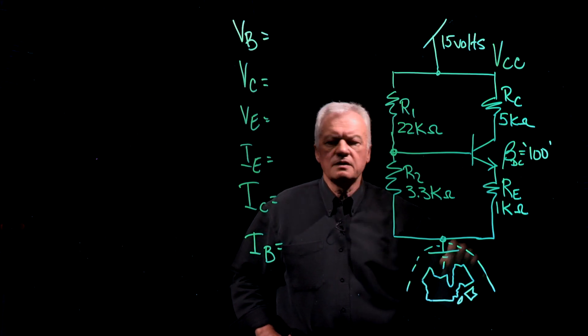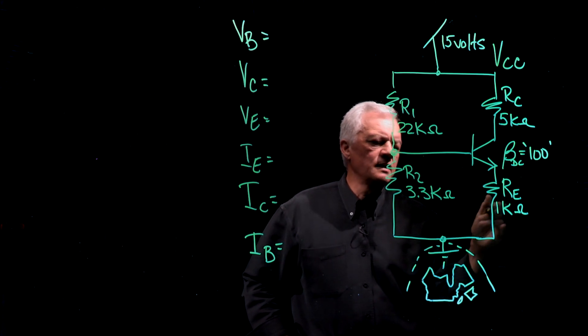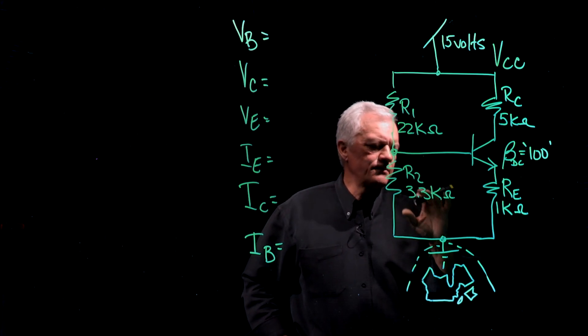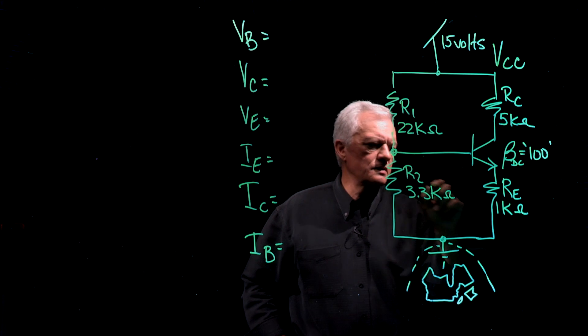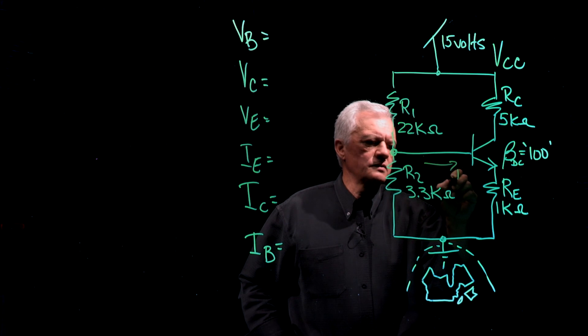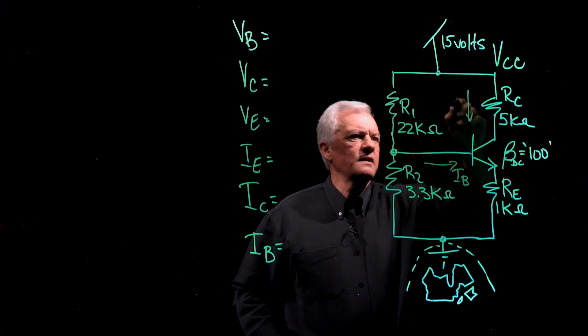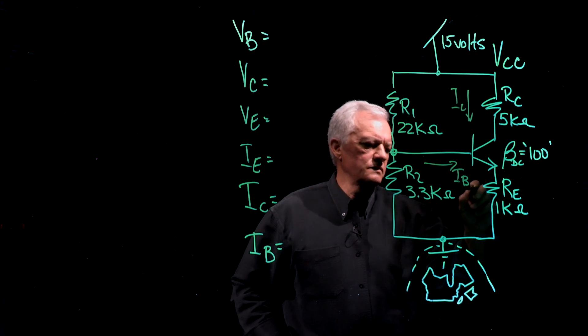We're going to select a beta of 100. I put DC down here for a couple of reasons. One, for DC, for direct current, we use capital letters like that. And so I would say that is a quiescent current. This is again a DC current. Same thing here.